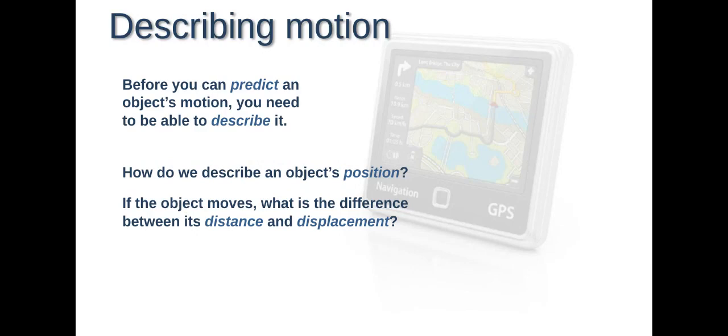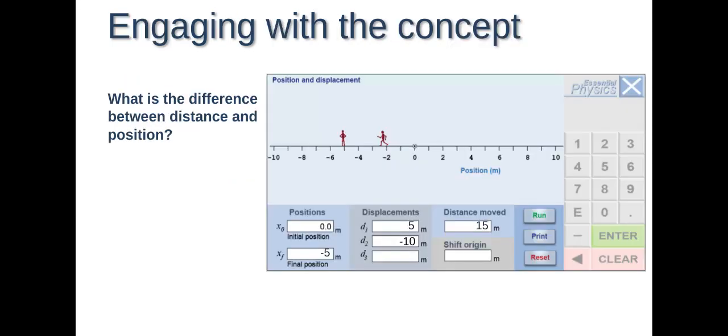So describing motion. Before you can predict an object's motion, you have to be able to describe it, and what that includes is the position of it. You have to have an origin. So if an object moves, what's the difference between its distance and displacement? So distance is always going to be positive, and it doesn't tell you where you are because it has no directional information.